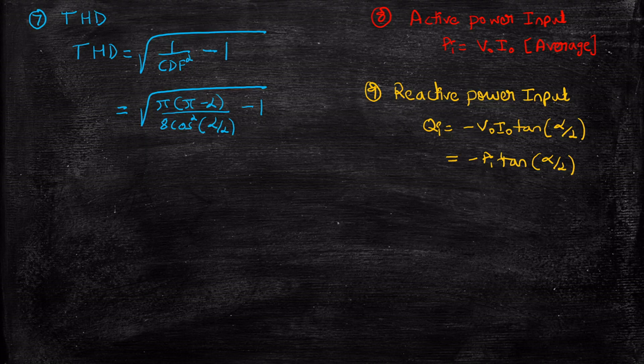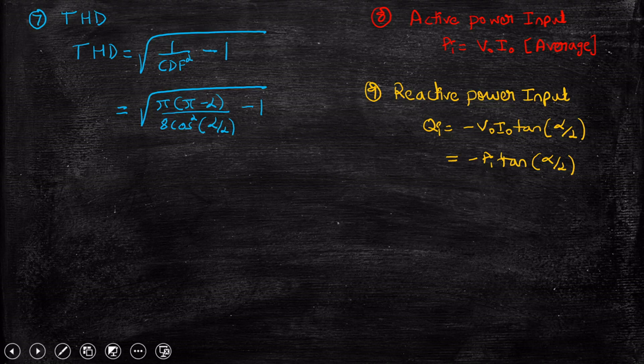So these are the important inferences and this is how we perform Fourier analysis of a single-phase semi-converter. These formulas are useful for solving numerical problems, so please make a note of all of them. I hope this video gave you a clear understanding of Fourier analysis for a semi-converter. If you have any questions, feel free to reach out in the comment section below. Thanks for watching, stay tuned — thank you.